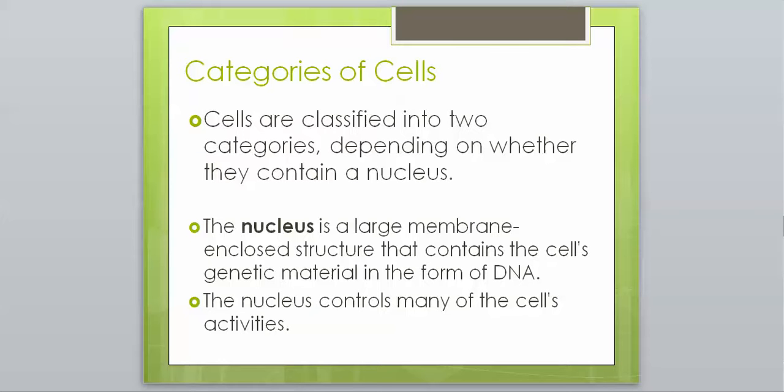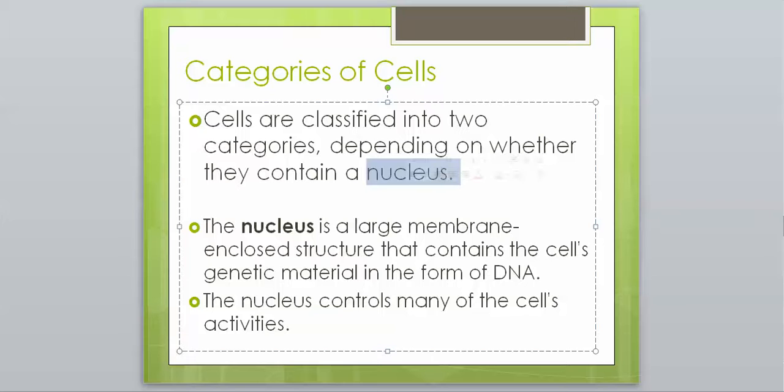They're classified into two categories depending on whether or not they contain a nucleus. The nucleus is a large membrane-enclosed structure that contains the cell's genetic material in the form of DNA. The nucleus controls many of the cell's activities. The nucleus is kind of at the center of things and would be considered the brain.